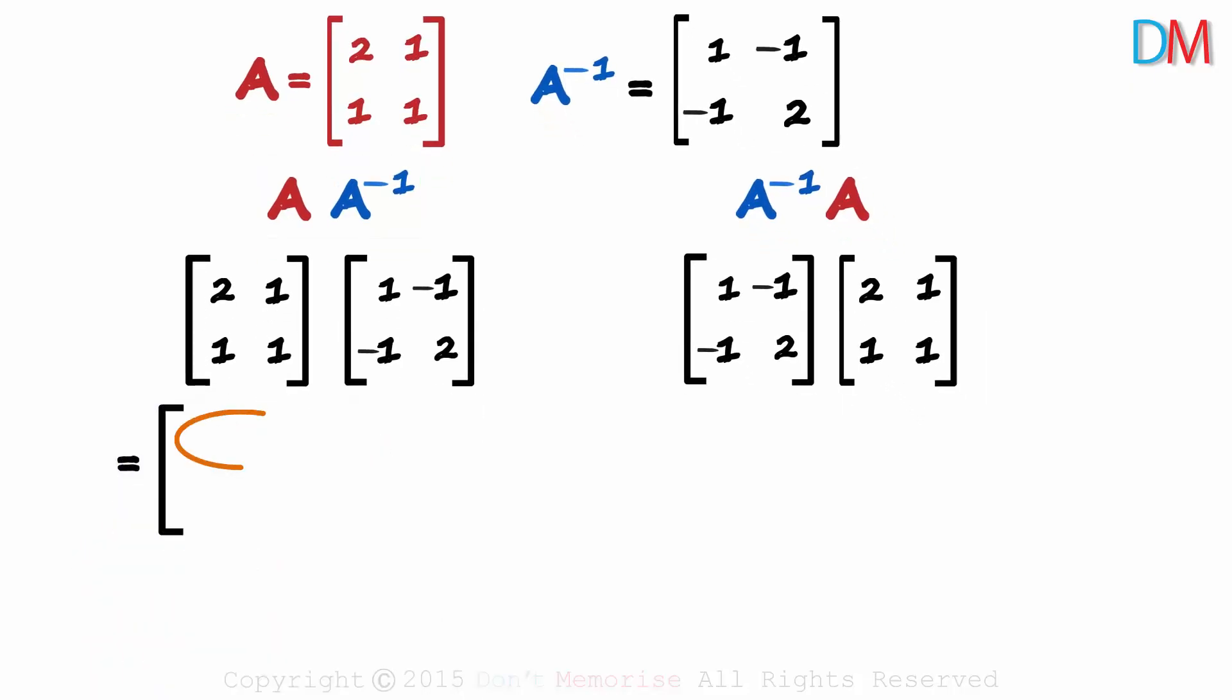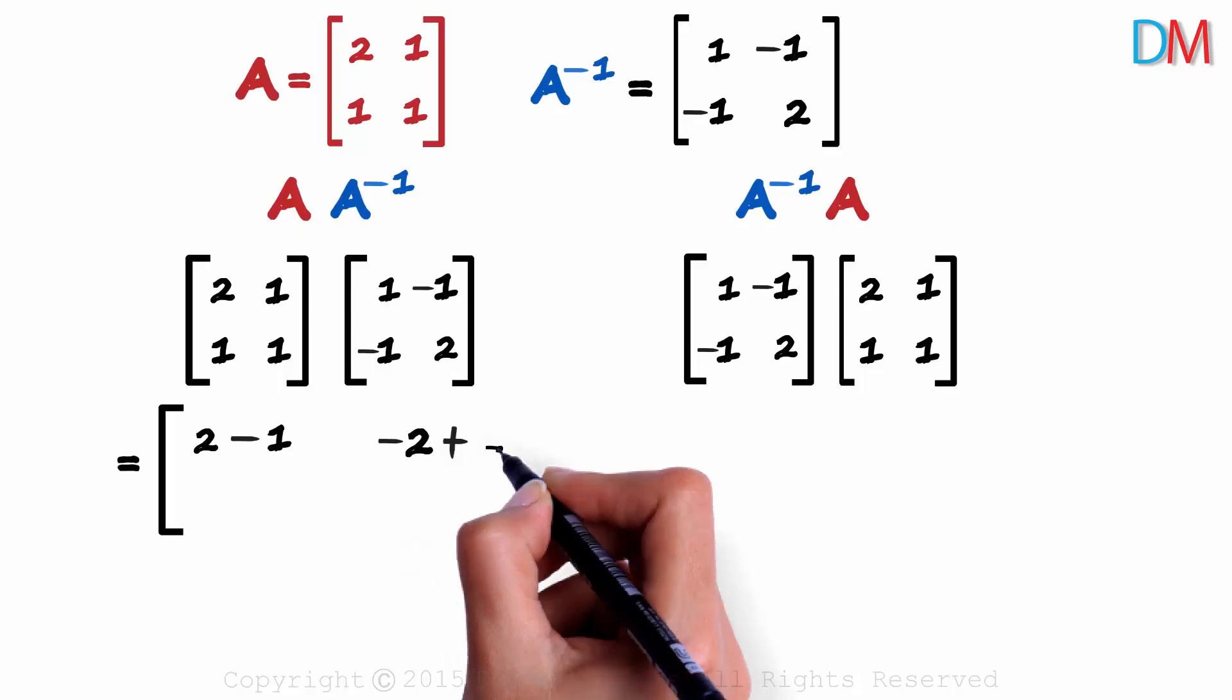It will equal the product of the first row with the first column. 2 times 1 plus 1 times minus 1. 2 minus 1. For the 1 2th element, we multiply the first row with the second column. 2 times minus 1 plus 1 times 2. We get minus 2 plus 2.